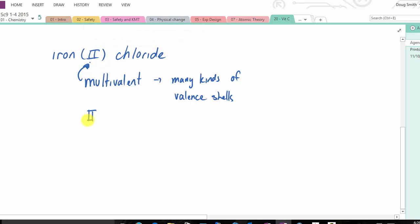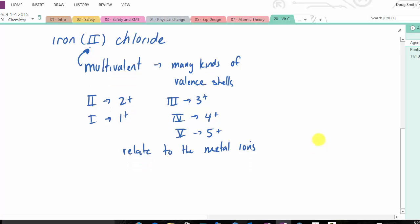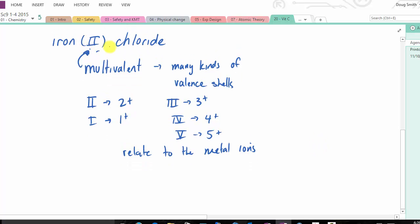So Roman numeral II is 2+, that would be 1+, III is 3+, IV is 4+, and there may even be a 5+, I'm not too sure. And these things always relate to the metal ions, or the first of the, when you're forming a compound, it's always the first compound, the metal ion.